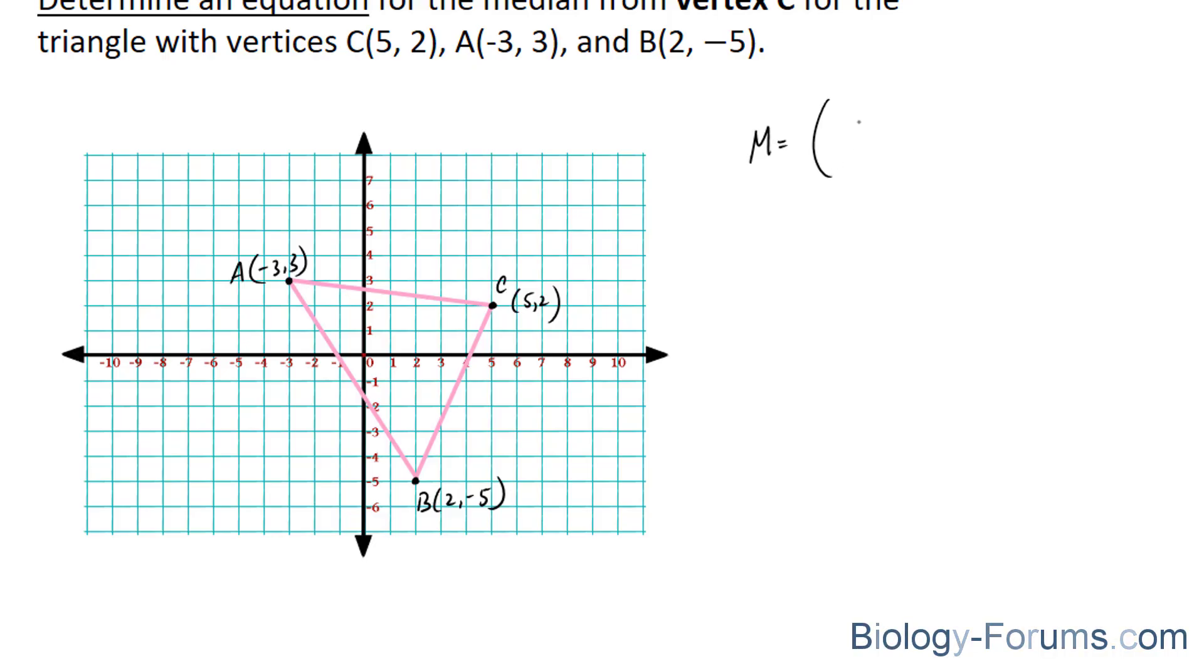And the midpoint formula looks like this. Midpoint is equal to x1 plus x2 over 2 and y1 plus y2 over 2. And since we're focusing on A and B, this will be our first and our second point.